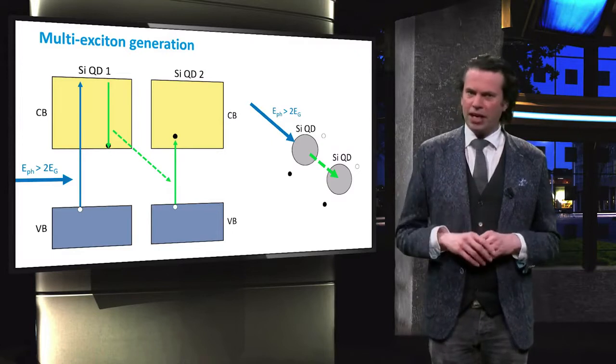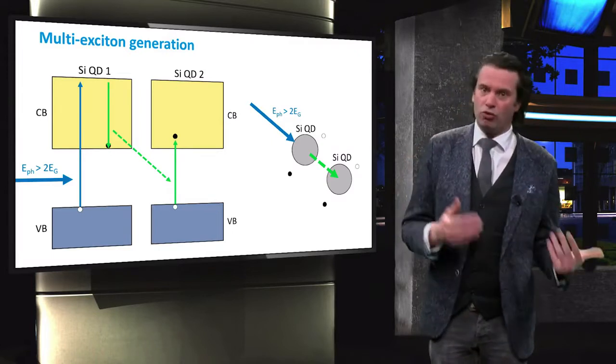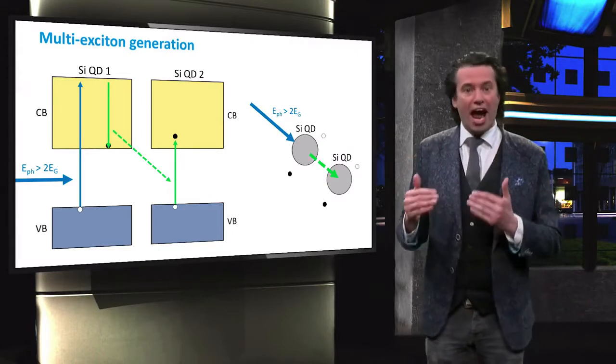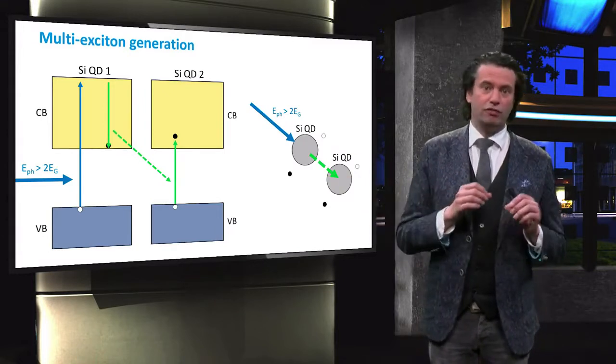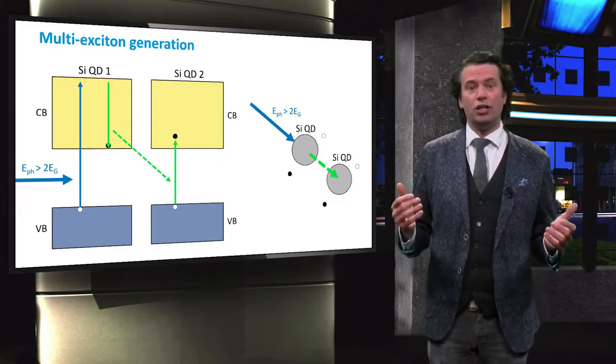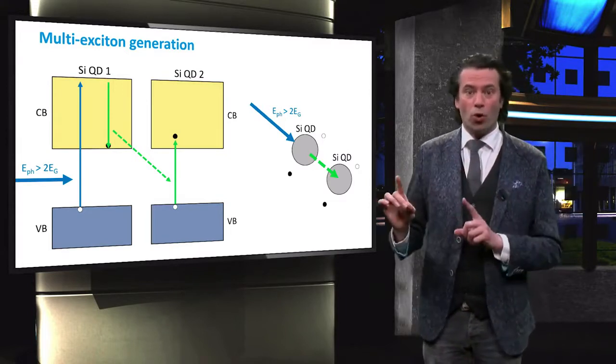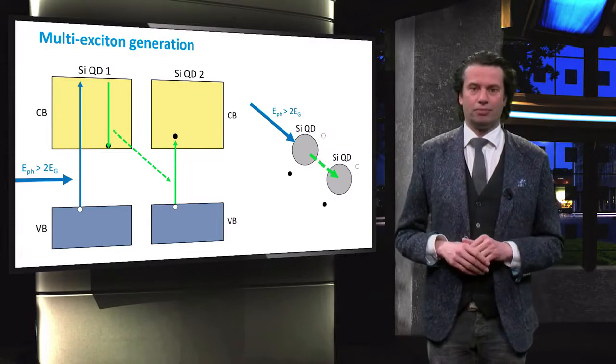Therefore, in contrast to spectral downconversion, two or more excitons are generated, rather than two lower energy photons. Consequently, one incident photon results in more than one generated electron.